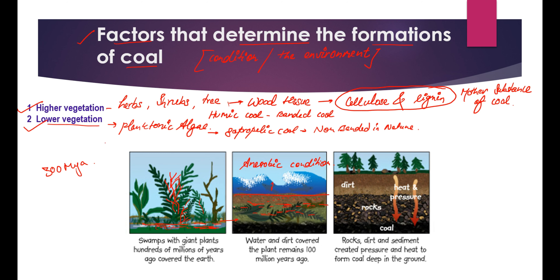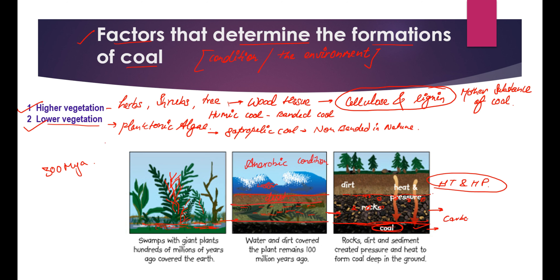This sediment cover blocked the atmospheric connection with the partially decaying matter, creating anaerobic conditions. As the material was buried deeper and deeper, anaerobic thermal degradation took place. After millions of years, the coal bed was deposited at greater depth. Due to overburden pressure from sediment load, high temperature and high pressure caused physical and chemical changes, producing higher-grade coal — mature, rich in carbon, with decreasing concentrations of hydrogen, nitrogen, oxygen, and sulfur.